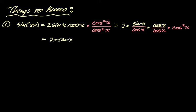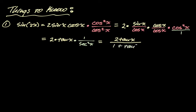Sine over cosine is tangent, and cosine over cosine is just 1. We move the cosine squared into the denominator as secant squared, since 1 over secant squared equals cosine squared. The reason we want that is secant squared equals 1 plus tan squared. So we replace secant squared with 1 plus tan squared. This is a useful thing to remember — you can turn sine of 2x into this form, and you use it frequently in these types of integral problems.